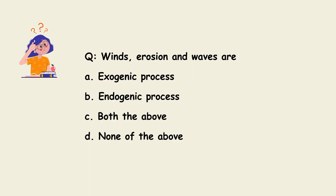Next question: winds, erosion, and waves are — A. Exogenic process, B. Endogenic process, C. Both the above, D. None of the above. The answer is A — winds, erosion, and waves are exogenic processes.